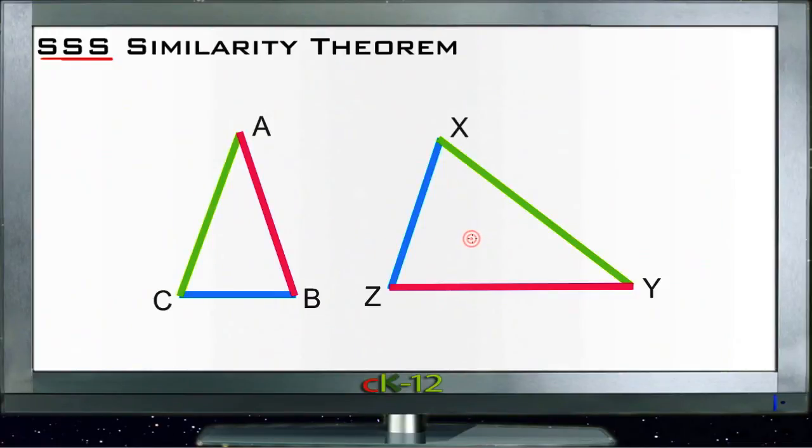They must be the same shape, just different sizes. So for instance, if on the smaller triangle here, we say side AB is six units, side CB is four units, and AC is six units.